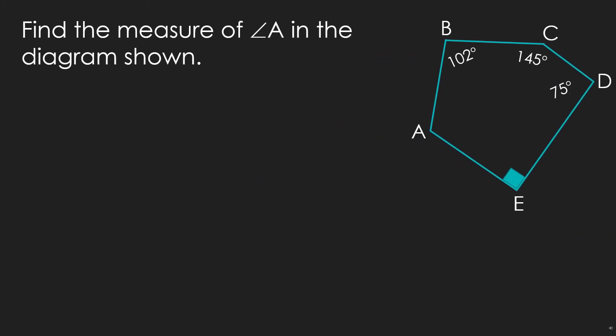Let's now find the measure of angle A in the diagram shown. The figure is a pentagon which has 5 sides. There are 4 given angles. This symbol means the measure of this angle is 90 degrees. Thus, the given angles are 102, 145, 75, and 90 degrees respectively.